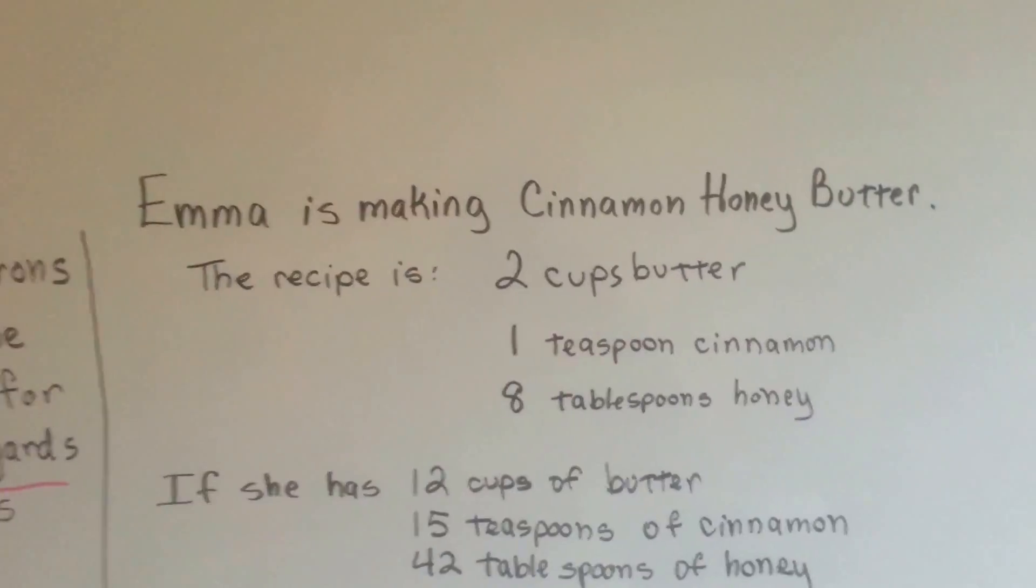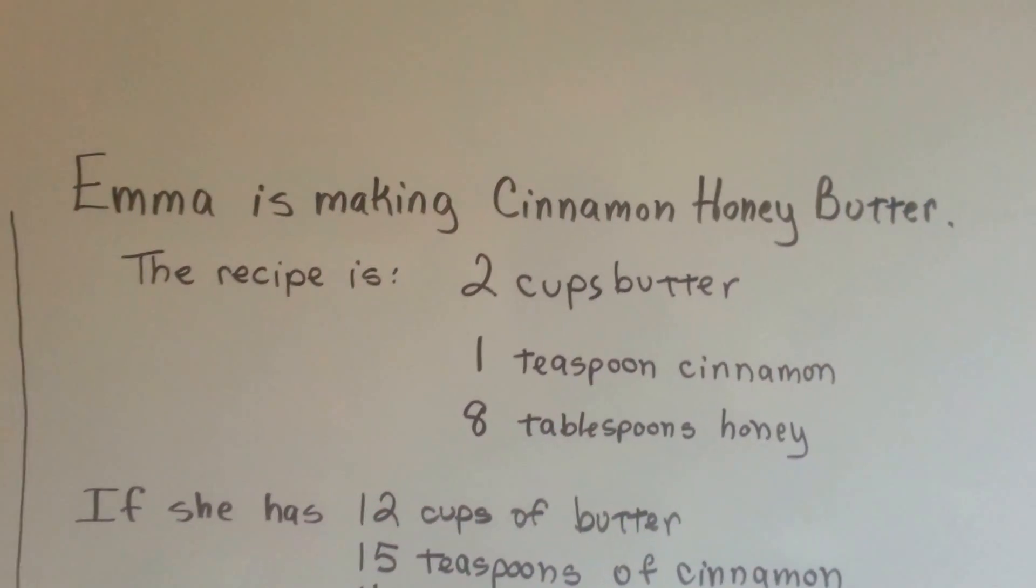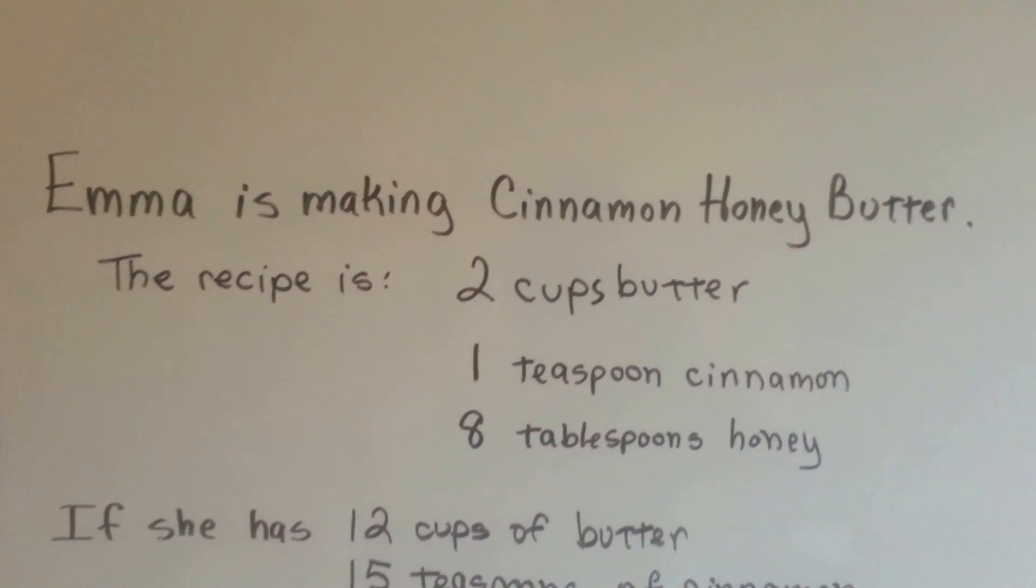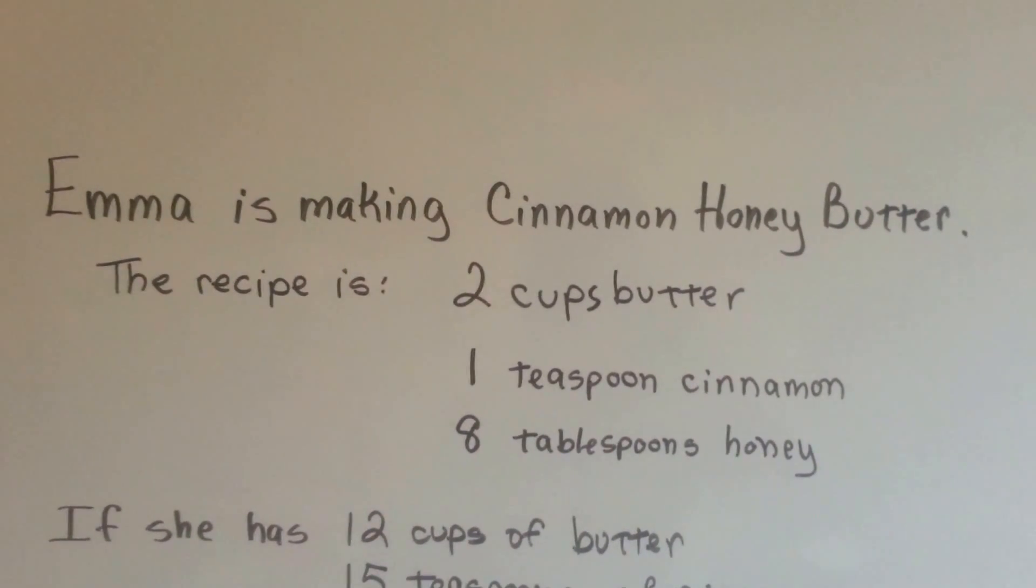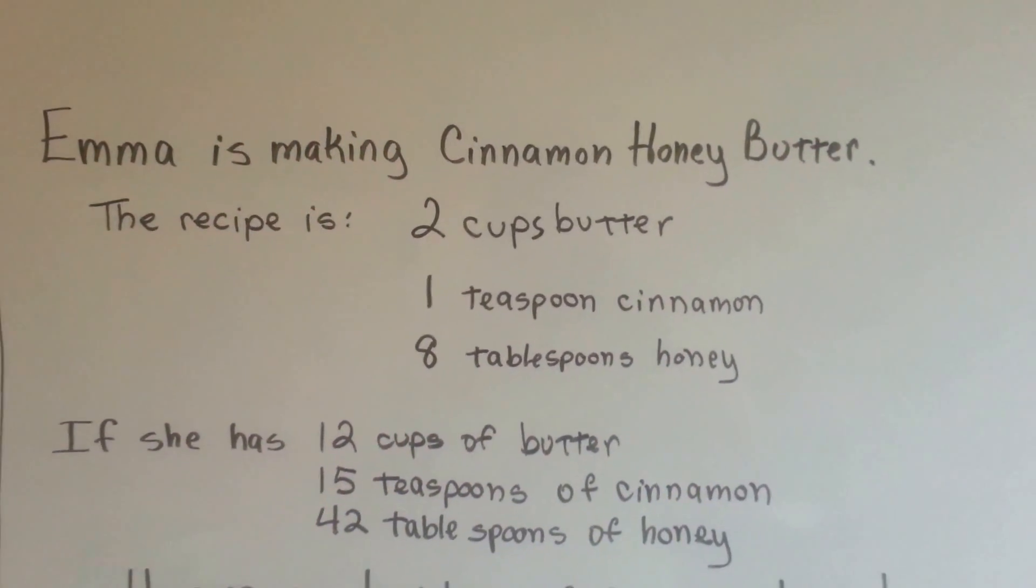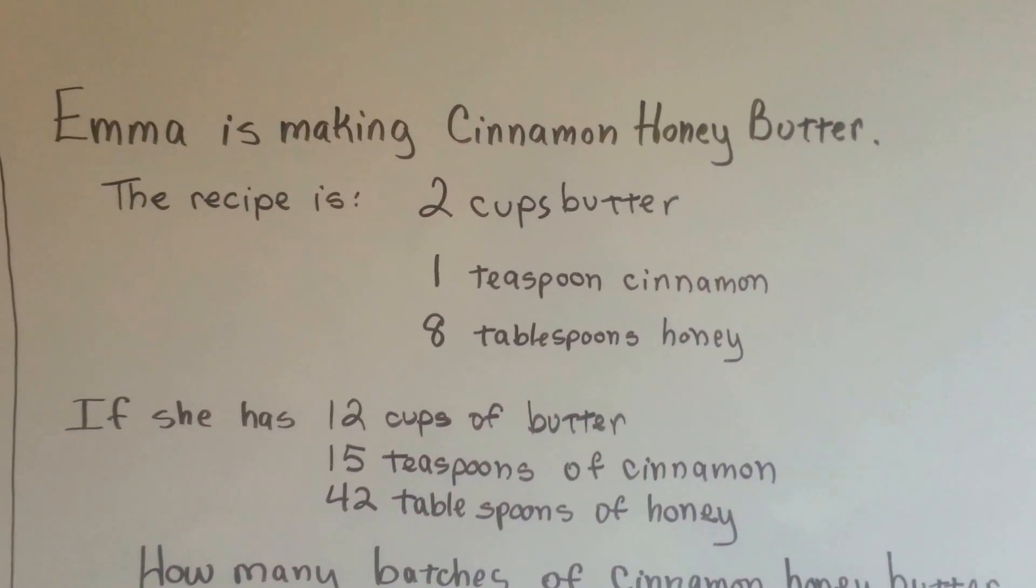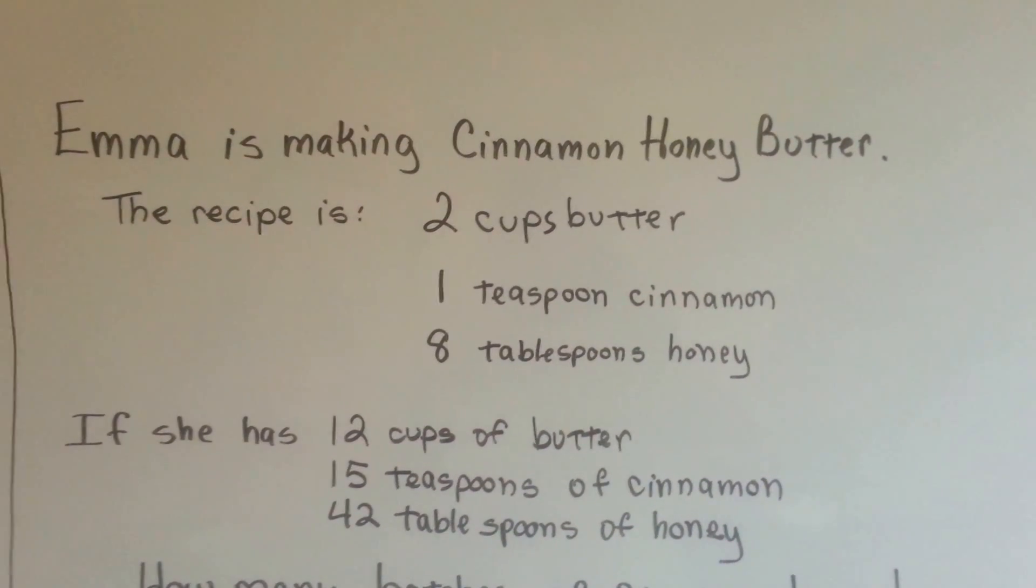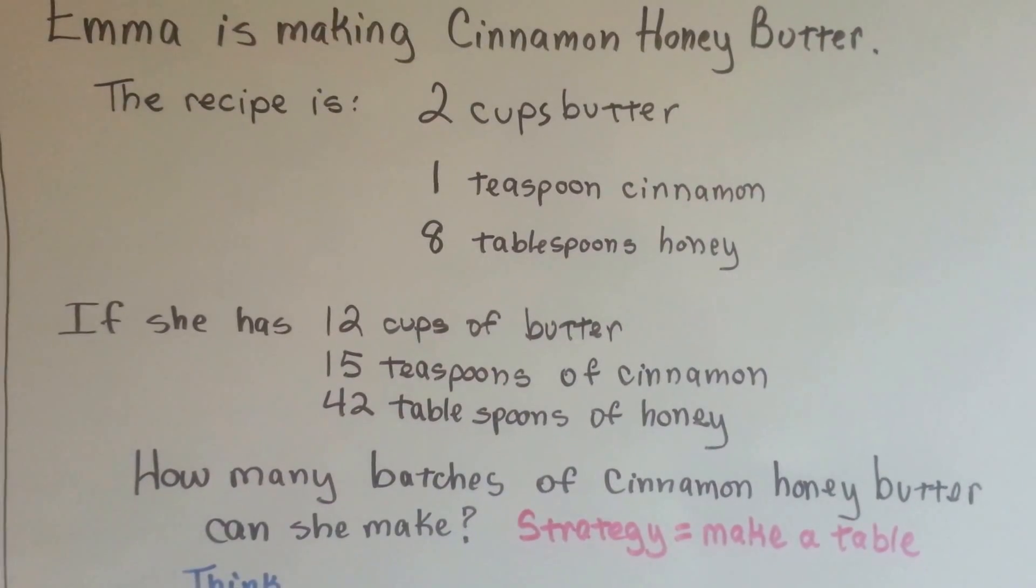Let's see what Emma's up to. Emma is making cinnamon honey butter. Her recipe is 2 cups of butter, 1 teaspoon of cinnamon, and 8 tablespoons of honey. She mixes them together really well and she's got her cinnamon honey butter. If she has 12 cups of butter, 15 teaspoons of cinnamon, and 42 tablespoons of honey, how many batches of cinnamon honey butter can she make?